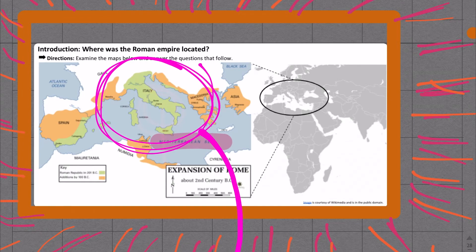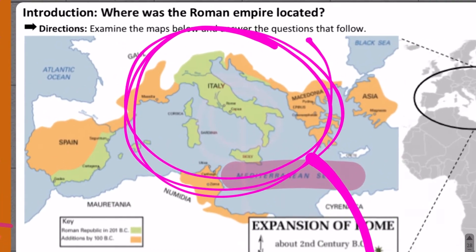What we're looking at in this map right here, if I zoom in, is the Mediterranean Sea and the peninsula of Italy jutting out into the Mediterranean.